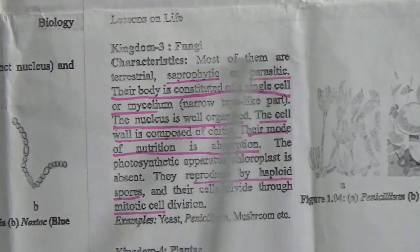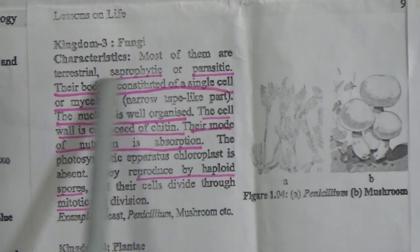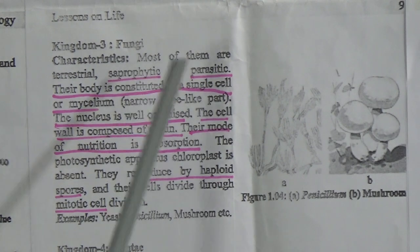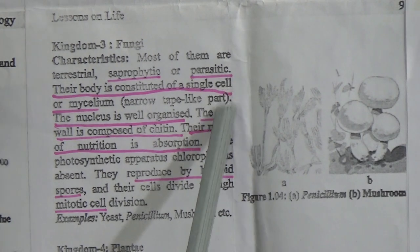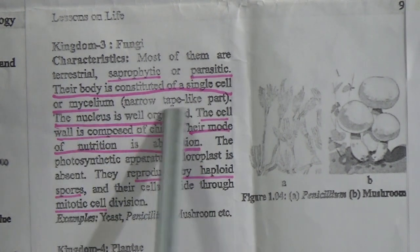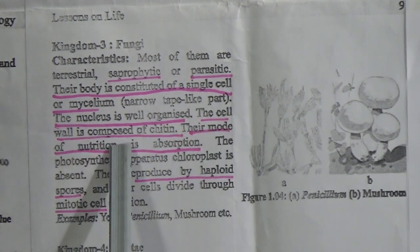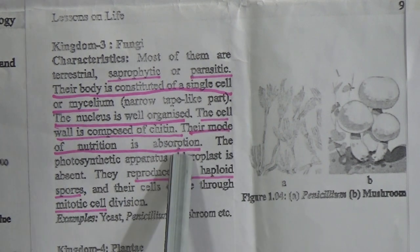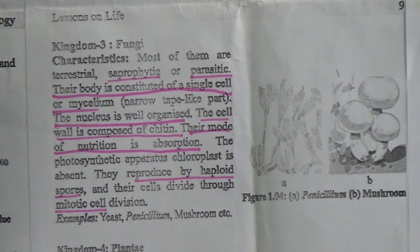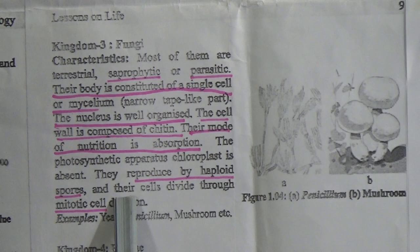Kingdom 3 is Fungi. Characteristics: most of them are terrestrial, saprophytic or parasitic. Saprophytic means they take food from dead bodies of animals or plants; parasitic means they take food from living organisms. Their body is constructed of a single cell or mycelia — narrow thread-like parts. The nucleus is well organized. The cell wall is composed of chitin. Their mode of nutrition is absorption. The photosynthetic apparatus, chloroplast, is absent — that is why they cannot perform photosynthesis. They are reproduced by haploid spores and their cells divide through meiotic cell division. Examples: yeast, penicillium, mushroom, etc.